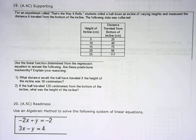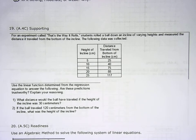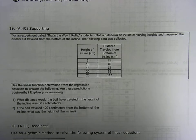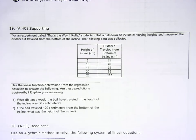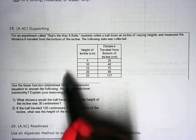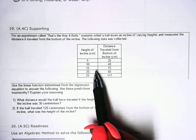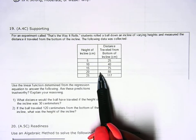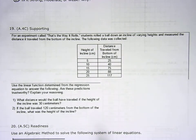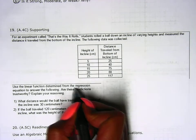Number 19 says for an experiment called 'That's the Way It Rolls,' students rolled a ball down an incline of varying heights and measured the distance it traveled from the bottom of the incline. The following data was collected. Now just like we did on the past couple of problems, use these data points, create a table in your calculator and get that equation. Run the linear regression - that's what it's called, the linear regression.